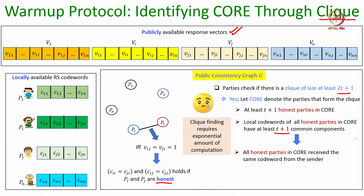We have proved that local codewords of all honest parties in the clique are the same, because since the honest parties in the clique constitute a clique, pairwise between every pair of honest parties there are common components, and using the properties of Reed-Solomon codewords we know all honest parties in the core have the same codeword received from the sender. It is this particular step that requires the parties to perform an exponential amount of computation — checking whether a clique of size at least 2t+1 is present in the consistency graph.